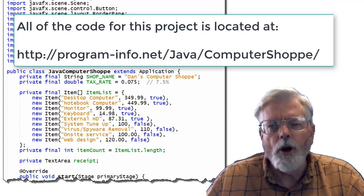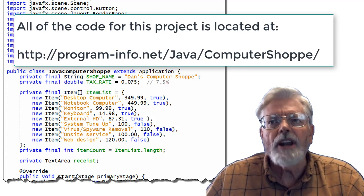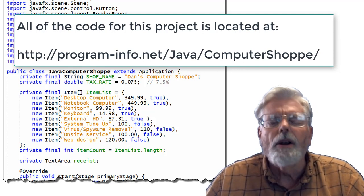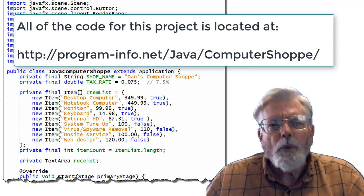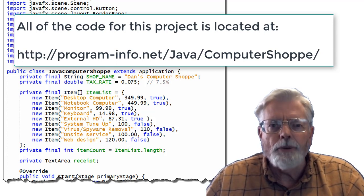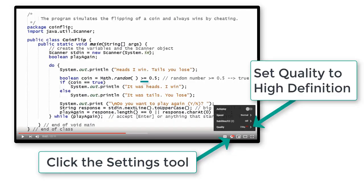All of the code for this project is located at program-info.net/java/computershop — watch the capitalization. You might want to print out a copy of the code as you view the video. If you are using YouTube, I recommend setting the quality to high definition because there is a lot of detail in many of the pictures.